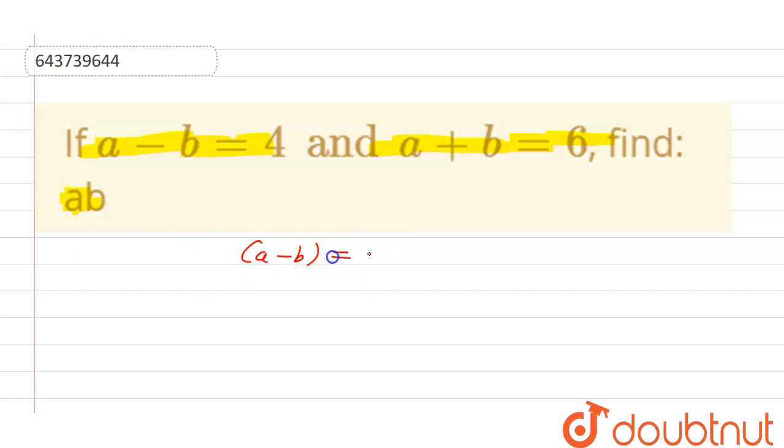The given equation is a minus b equal to 4, and next we have a plus b equal to 6. We have to calculate the value of a into b. So now we can solve it. We can mark it as first, we can mark it as second.